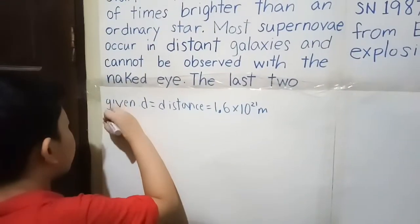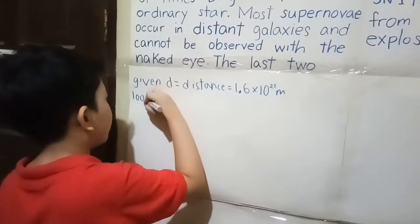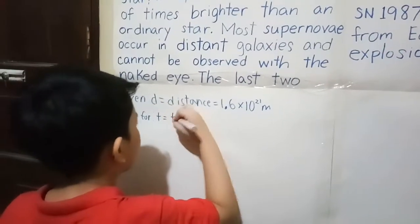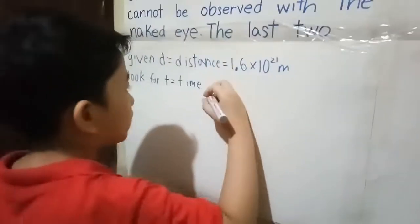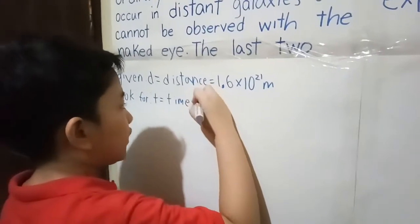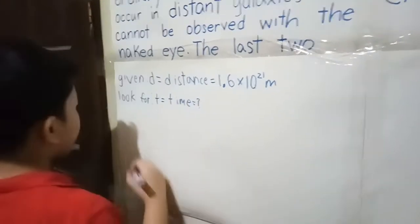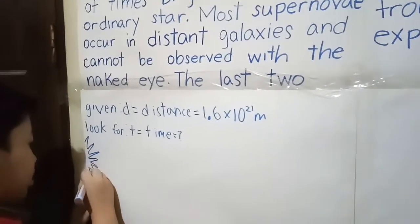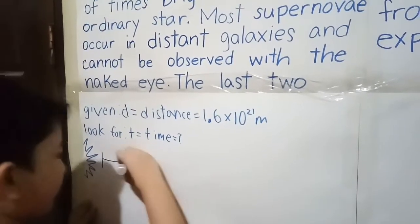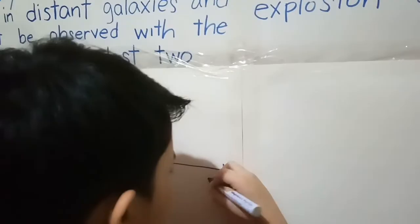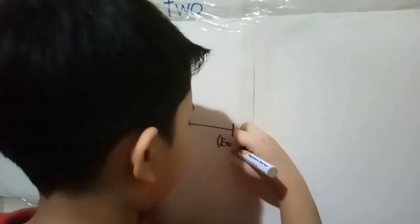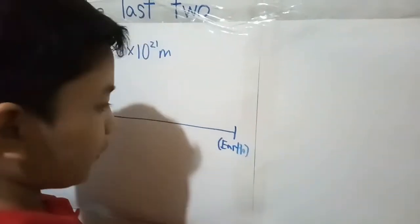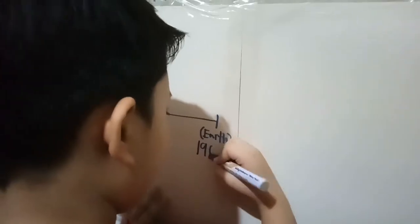Now we are looking for T, which means time, which is unknown. First, let me draw this problem. This is the explosion, and this over here is Earth. That is Earth in 1987.